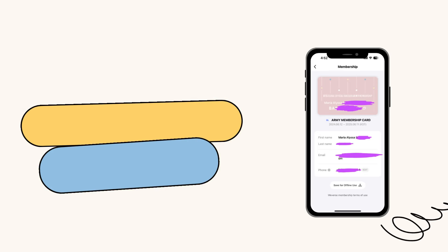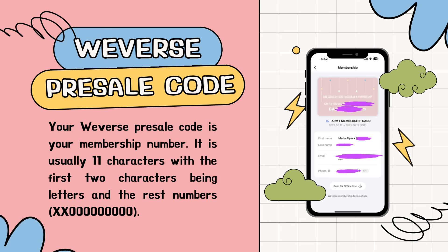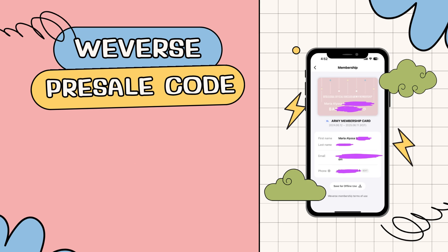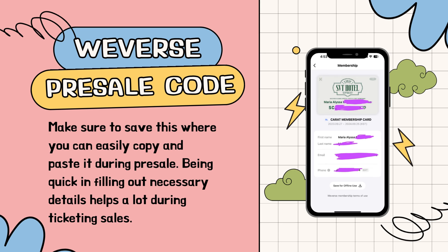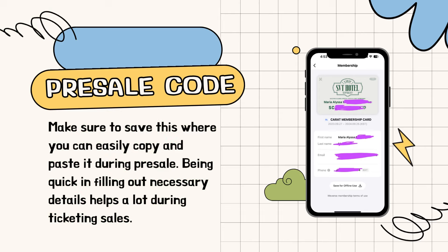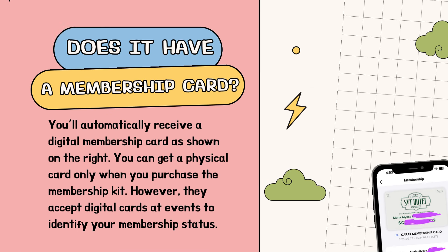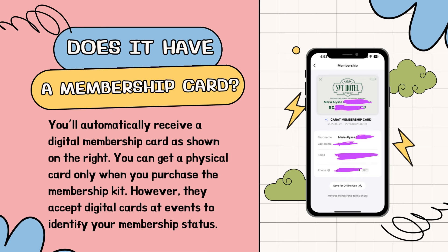Where to get your Weverse presale code? Your Weverse presale code is your membership number. It is usually 11 characters, with the first two characters being letters and the rest numbers. Make sure to save this where you can easily copy and paste it during presale — being quick and filling out necessary details helps a lot during ticketing sales. You'll automatically receive a digital membership card as shown on the right. You can get a physical card only when you purchase the membership kit. However, they accept digital cards at events to identify your membership status.